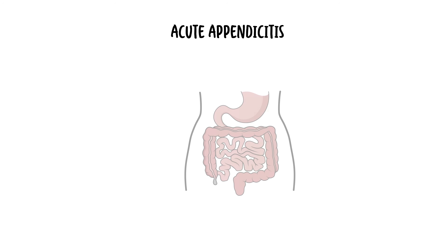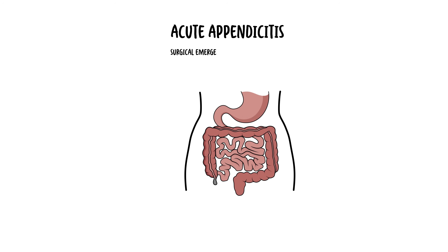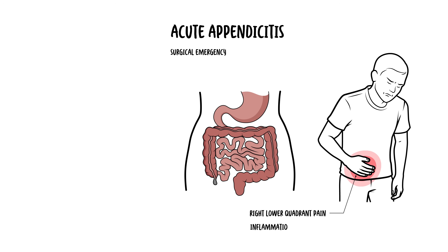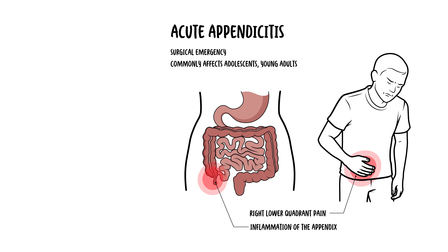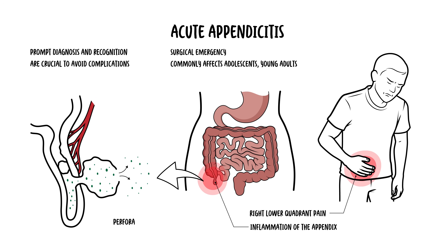Acute appendicitis is one of the most common surgical emergencies, typically presenting with right lower quadrant pain due to inflammation of the appendix. It most commonly affects adolescents and young adults but can occur at any age. Prompt diagnosis and recognition are crucial to avoid complications such as perforation and sepsis.